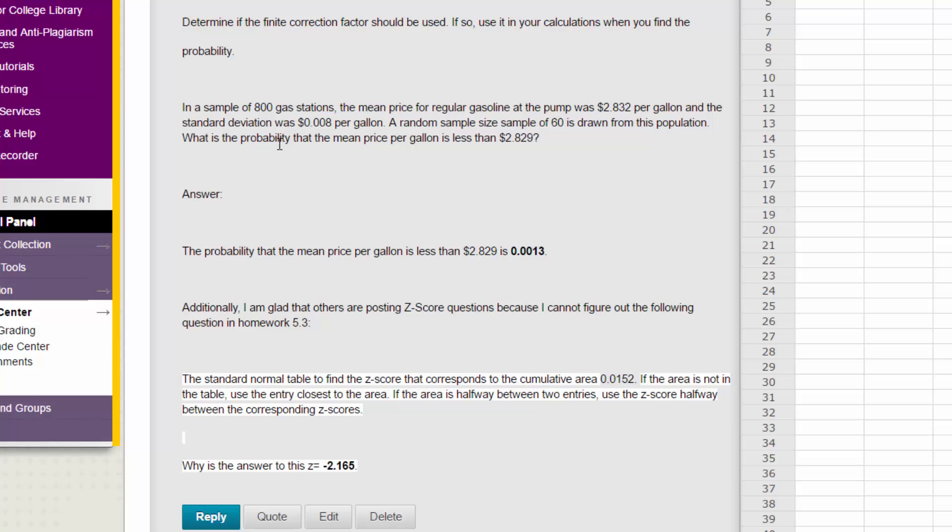On this first problem, it's a word problem. It gives us that we had a sample of 800 gas stations. We've got the mean price for regular gas at $2.832 per gallon, and the standard deviation was 0.008. And then the question is that we take a random sample of 60 from this population, and those are key words. The data we're given, the mean and the standard deviation, are the population mean and the population standard deviation sigma.